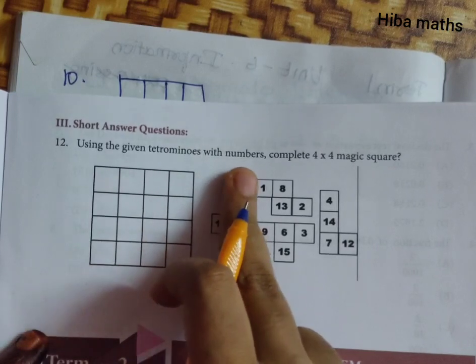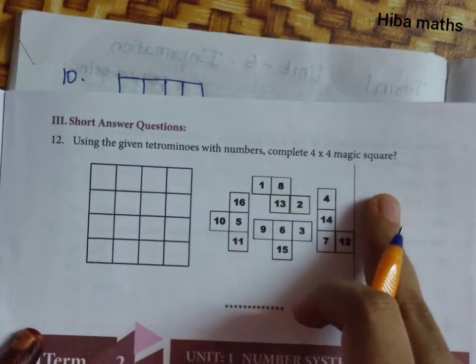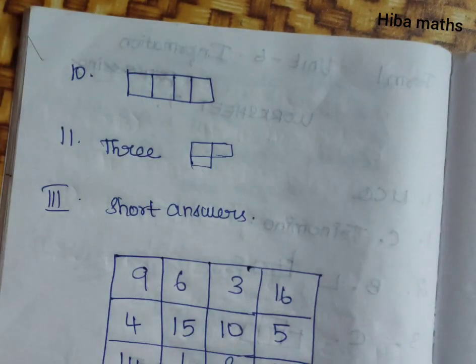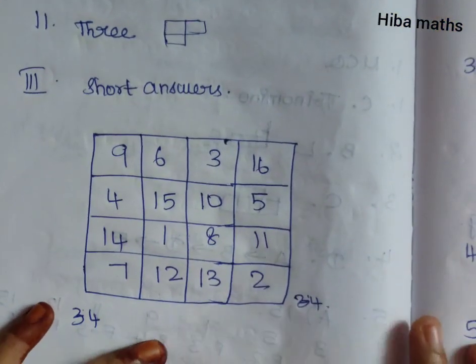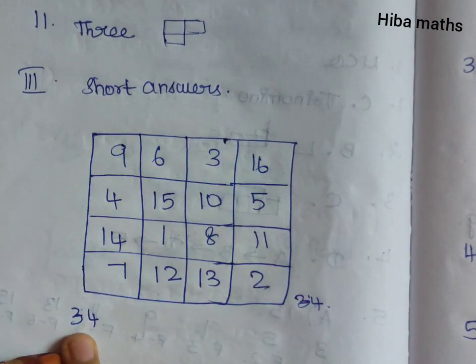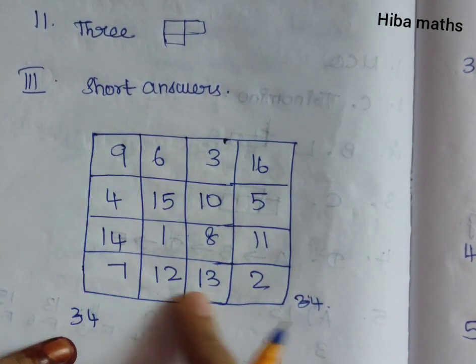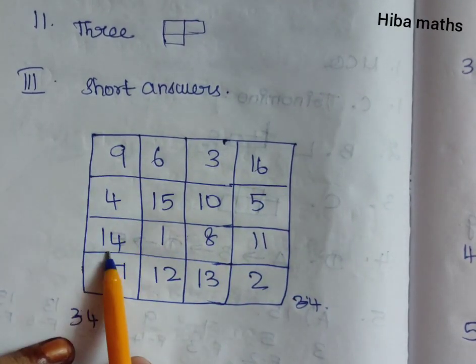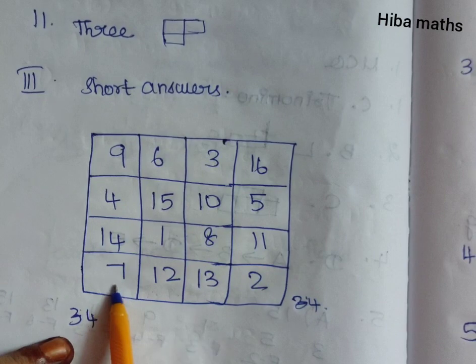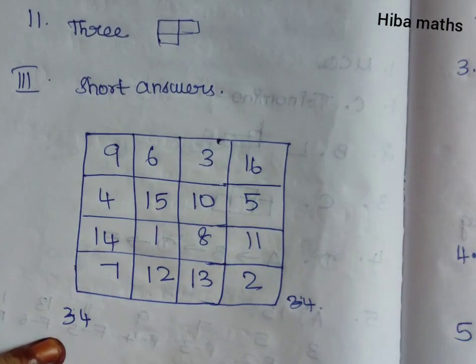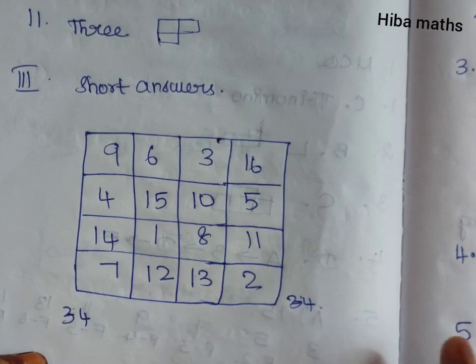Using the given tetrominoes with numbers, complete 4x4 magic square. So we have the magical squares. See the numbers, 34 numbers. That's where we have 34 numbers.